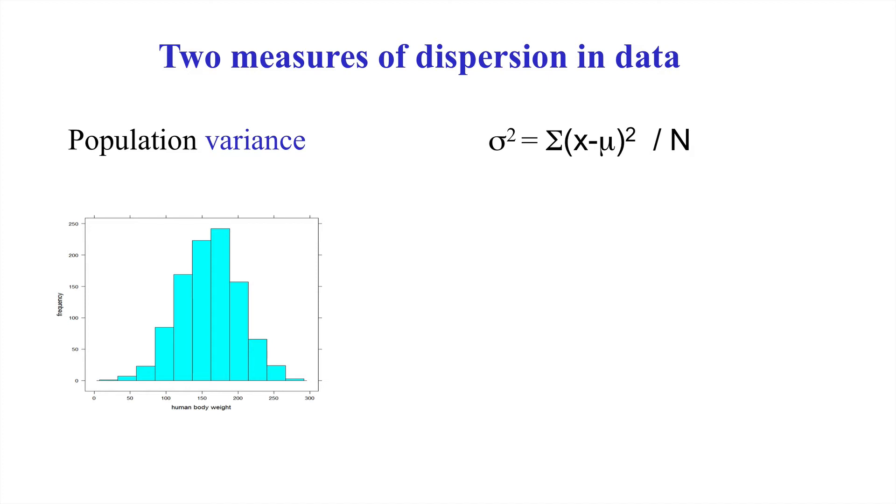We typically give it a Greek letter if we are dealing with the entire population. And because it's a squared term, we give it something like sigma squared. So it's the average squared deviation. Why do we use a square? Well, for one thing, it overrides this issue of positive and negative deviations from that sample mean. And secondly, it fits in very neatly to a whole range of other statistical theory.